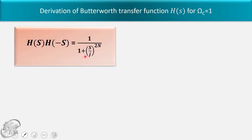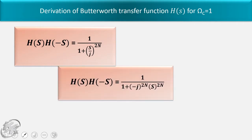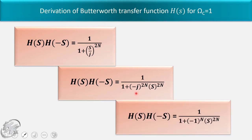Now 1/j is equal to -j. So put that in the formula. Since -j² equals -1, we have H(s) into H(-s) equal to 1 upon 1 plus (-1)^n · s to the power 2n.